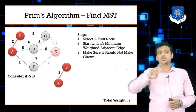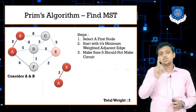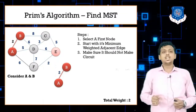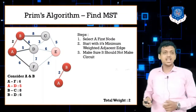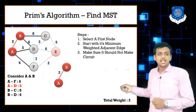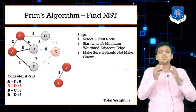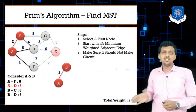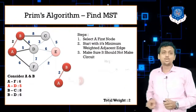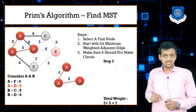Now I need to find the adjacent edge with minimum weight from both nodes A and B. The adjacent edges from A and B combined are AF, AD, BC, and BD. Out of all four edges, AD has the minimum weight, which is 5. So I select AD with weight 5. After step 2, my total weight becomes 2 plus 5, which is 7.